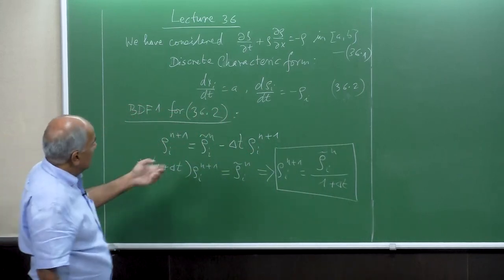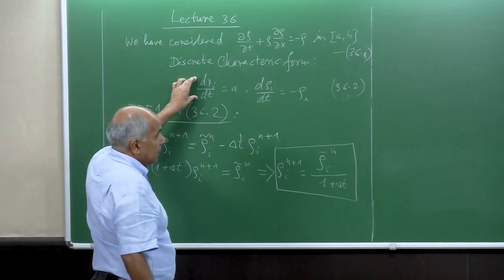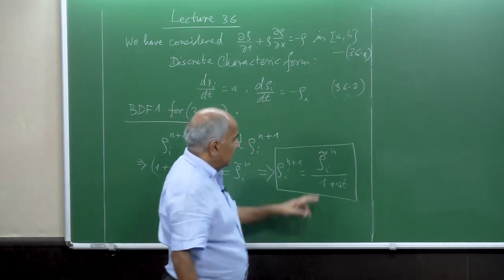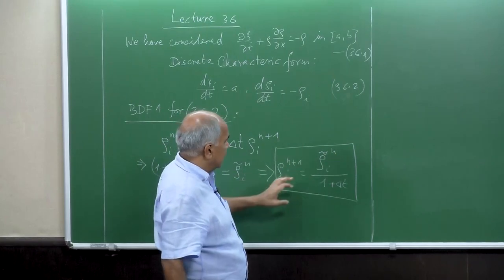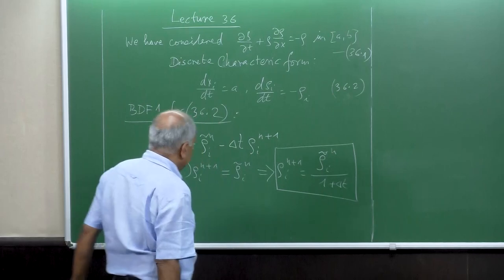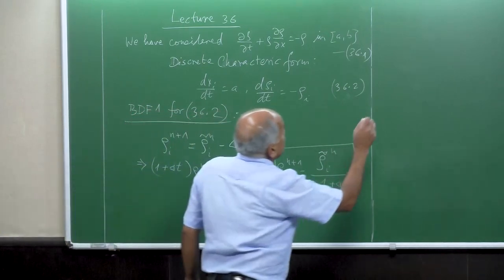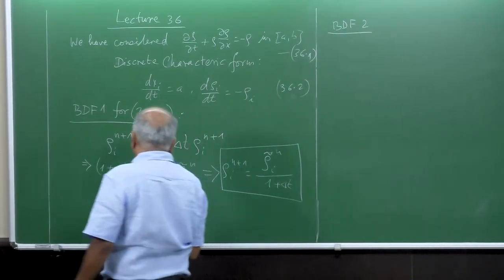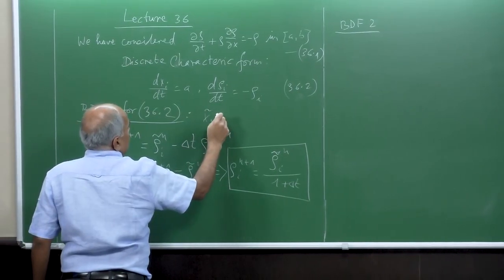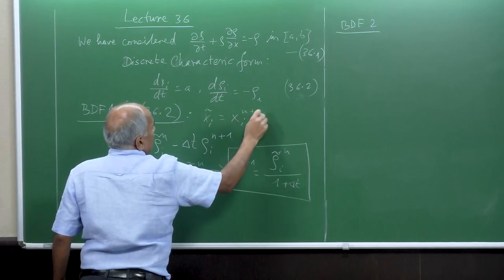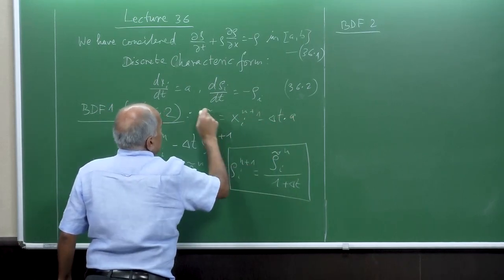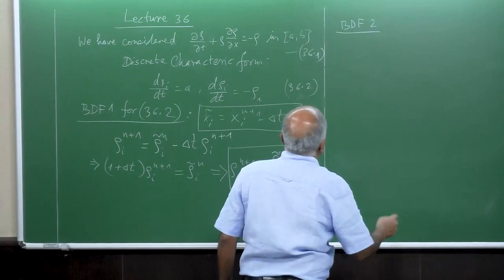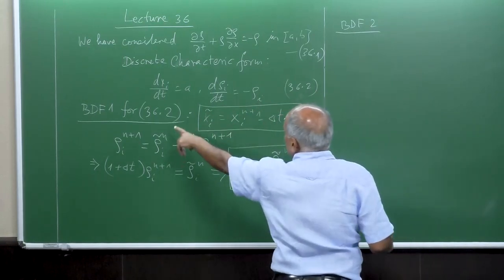So it is the same. Now you follow the foot of characteristics, find x_i tilde. If you find x_i tilde and then compute with the neighboring values, you get rho_i tilde and just plug rho_i tilde here. This is BDF1. Now BDF2: the characteristic x_i tilde equals x_i^{n+1} minus delta t times a. This is the characteristic we have. At x_i tilde we compute this with the moving least-squares approximation.